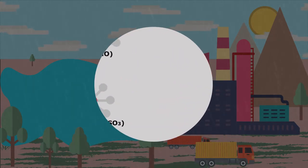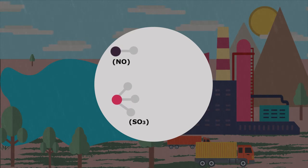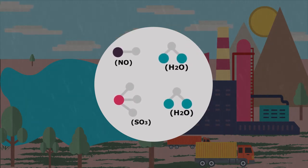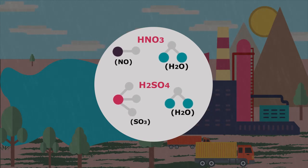When oxides of sulfur and nitrogen released from industries or by vehicles, they combine with water vapor to form sulfuric acid and nitric acid.